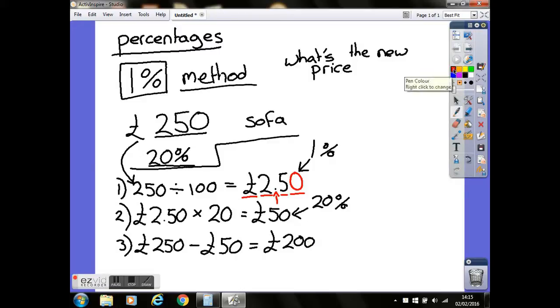That's all there is to it. One thing to be careful of: this one was a decrease or discount, so we minus the amount away. However, if it was a 20% increase, that means we'd be adding the amount on. So that's how we do the 1% method.